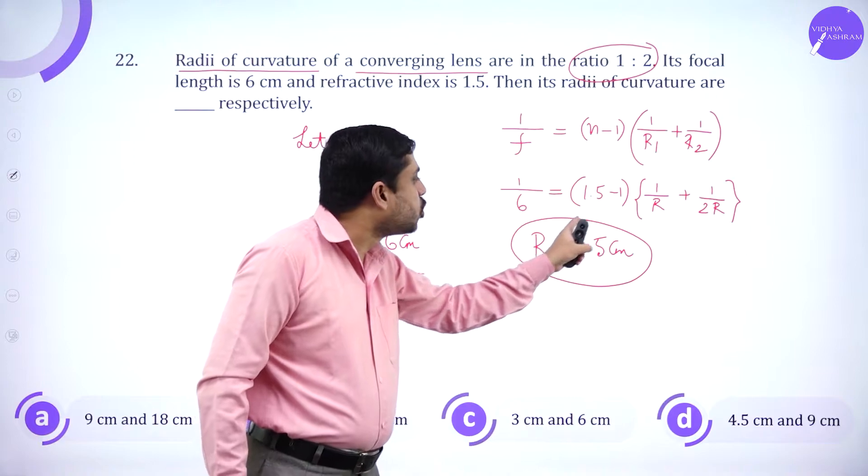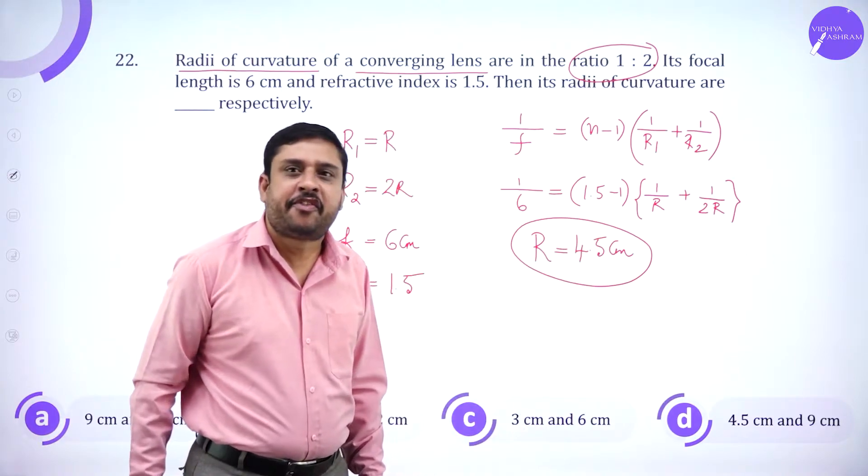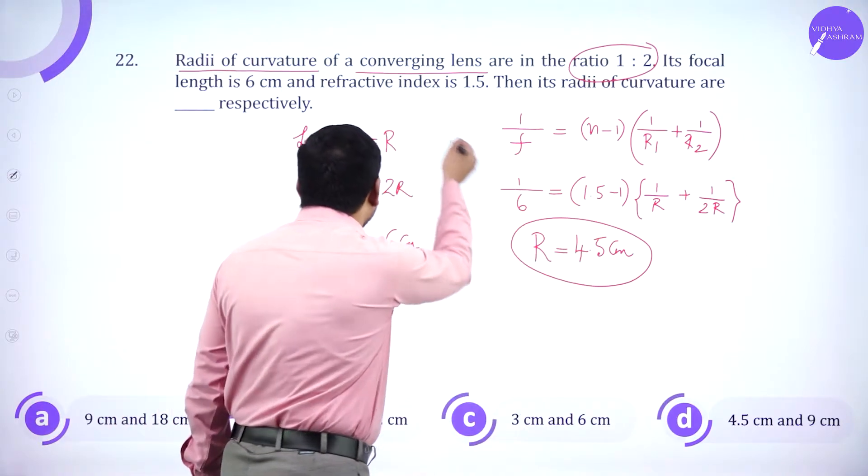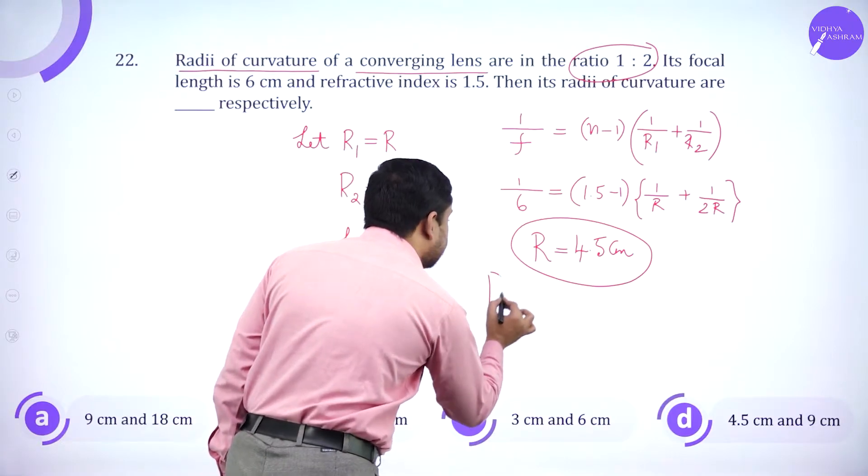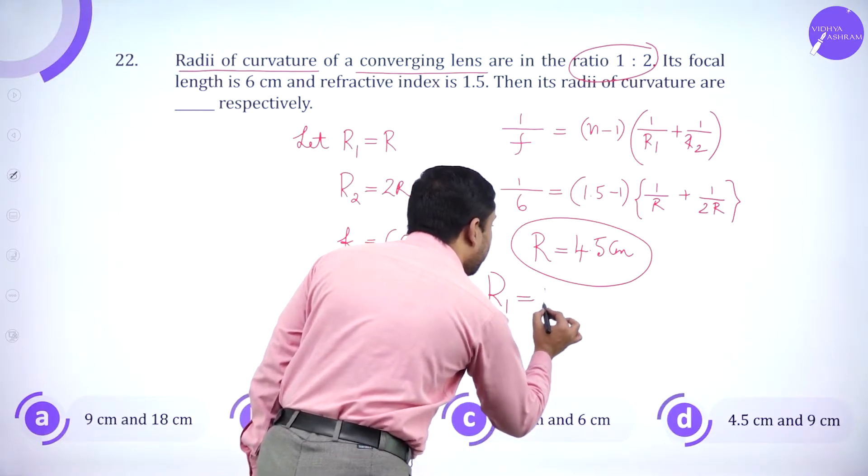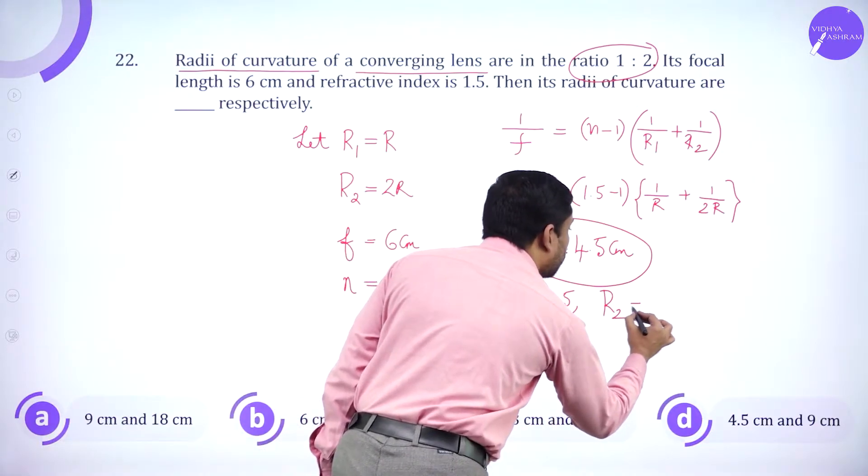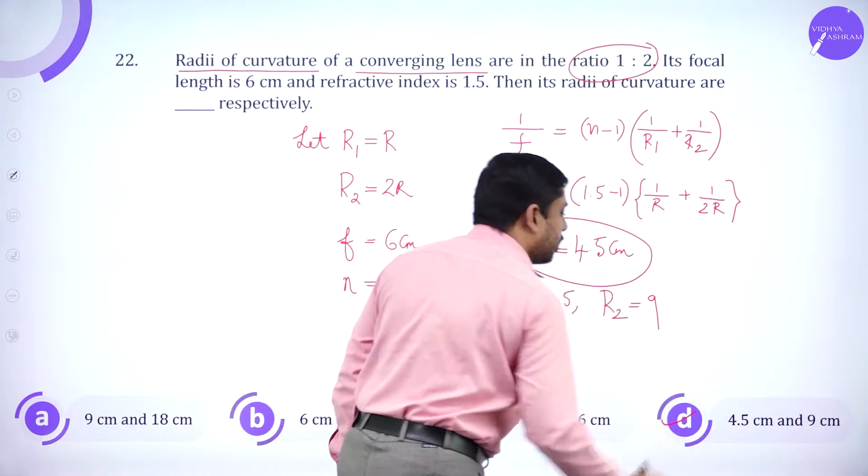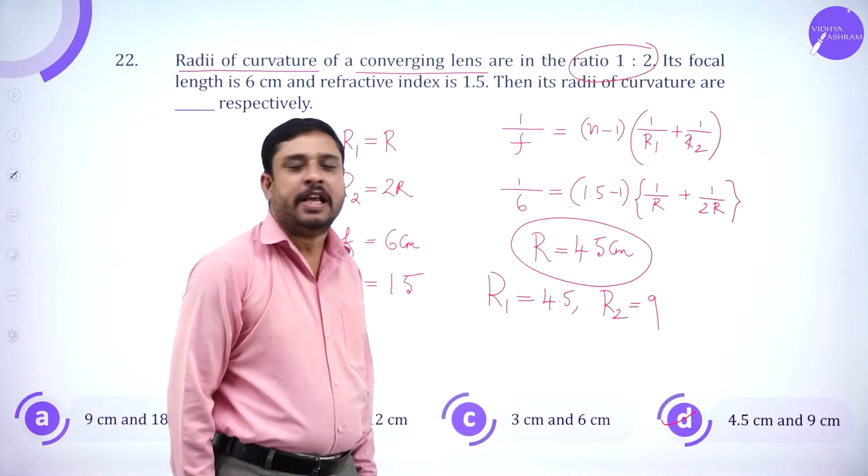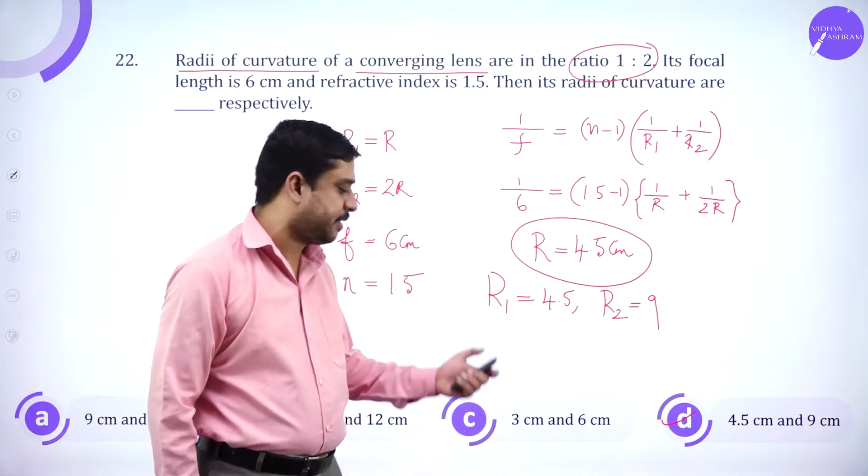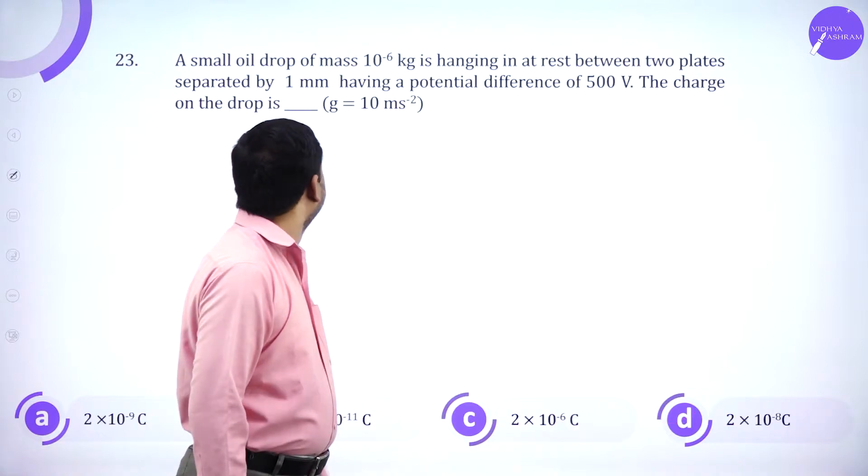So what is R? It is nothing but R1, which is 4.5 and hence R2 is 9. So the fourth option will be the correct answer.